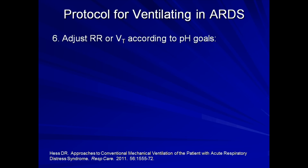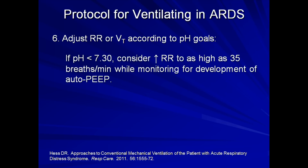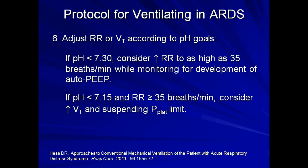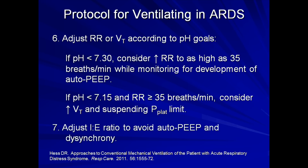Step 6: adjust the respiratory rate or tidal volume according to pH goals. If the pH is less than 7.30, consider increasing the respiratory rate to as high as 35 breaths per minute while monitoring for the development of auto-PEEP. If the pH is less than 7.15 and the respiratory rate is greater than or equal to 35 breaths per minute, consider increasing the tidal volume and suspending the plateau pressure limit. Step 7: adjust the I:E ratio to avoid auto-PEEP and dyssynchrony.